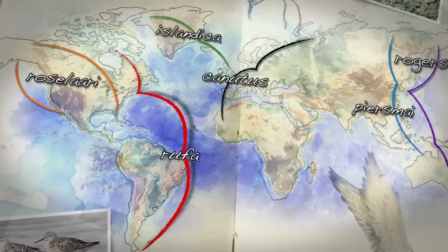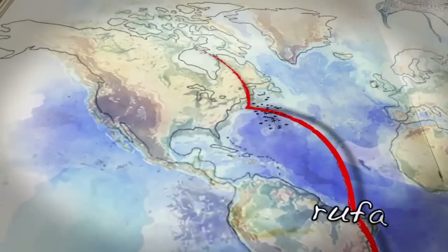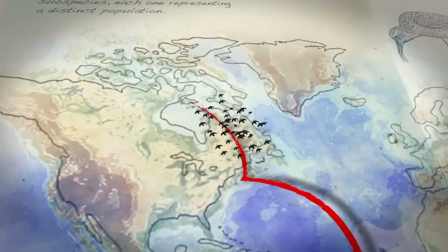In early April, the Red Knot Rufa departs from the southern tip of Argentina, en route for the Canadian Arctic, where it reproduces in early June.